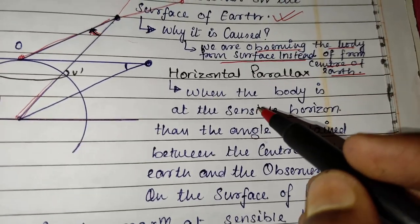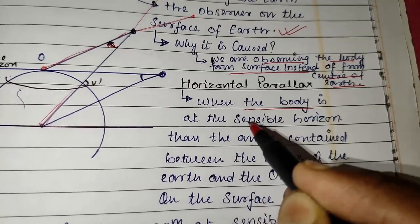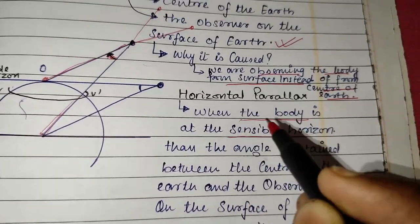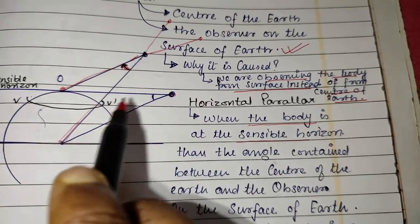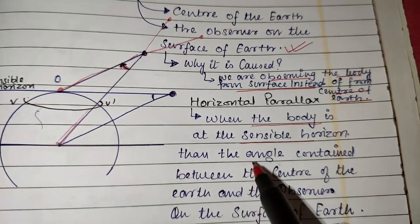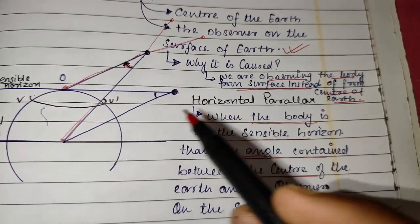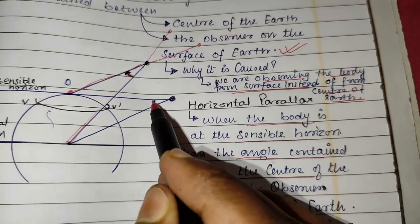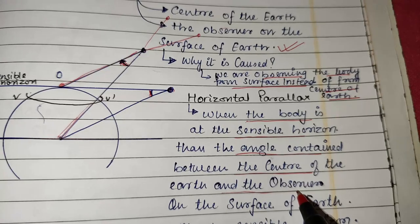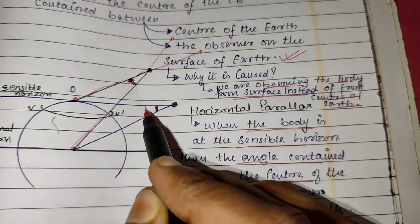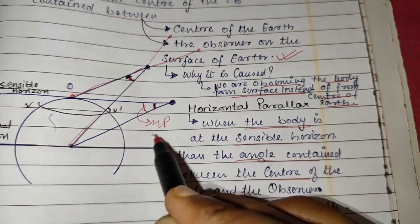Now what is horizontal parallax? When the body is at the sensible horizon — as you can see in this picture, this body is at the sensible horizon — the angle contained between the center of the earth and the observer on the surface of the earth is what we call horizontal parallax.